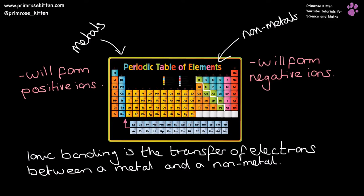Ionic bonding is bonding between a metal and a non-metal. Non-metals over this side of the periodic table will form negative ions, and metals over this side of the periodic table are going to form positive ions. And this is the transfer of electrons.